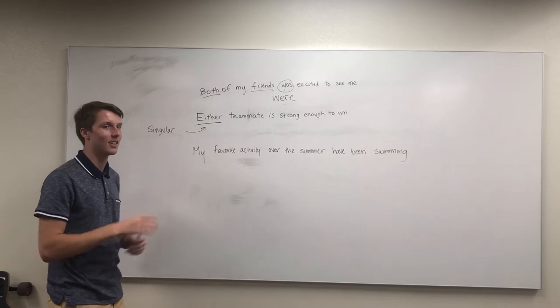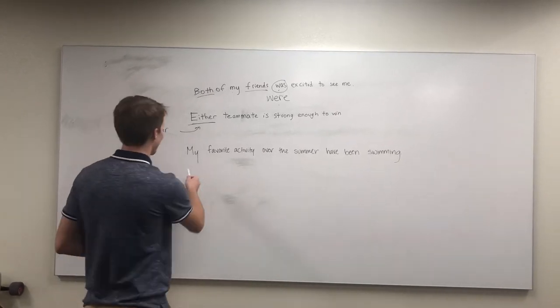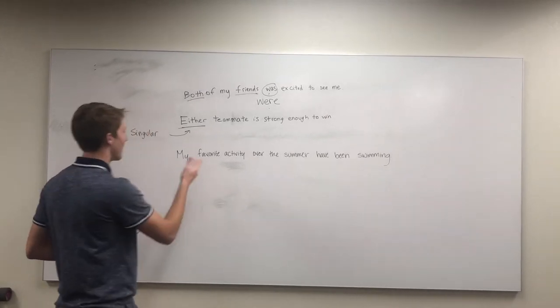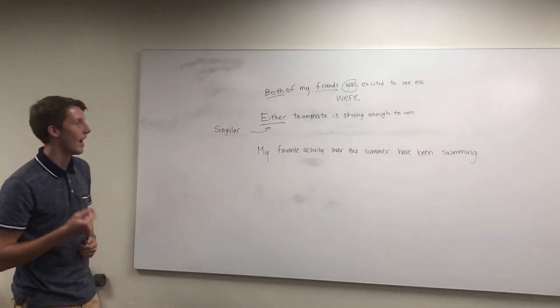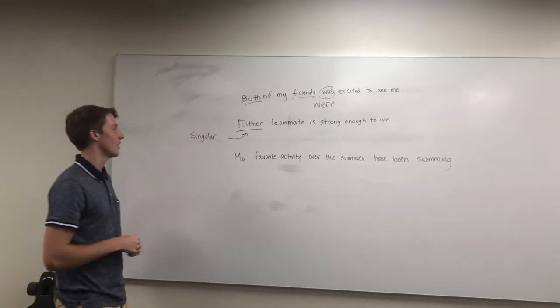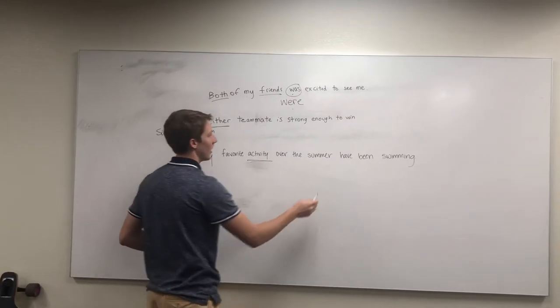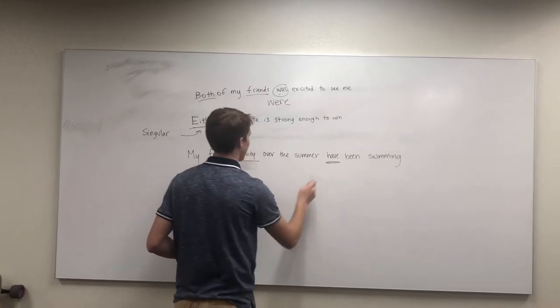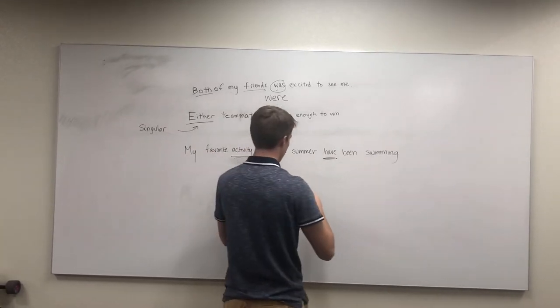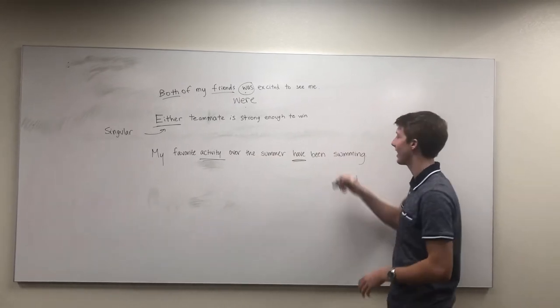This is: my favorite activity over the summer have been swimming. Since 'activity' is singular and 'have been' is plural, we need to fix this to: my favorite activity over the summer has been swimming.